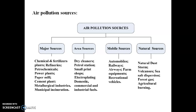Air pollution sources can also be classified depending on whether they are natural or anthropogenic — meaning man-made. Natural phenomena such as volcanoes, tornadoes, storms, and forest fires discharge dust, natural sea salt dispersion, and smoke from forest fires or agricultural burning. These represent the different types of natural and anthropogenic pollution sources.